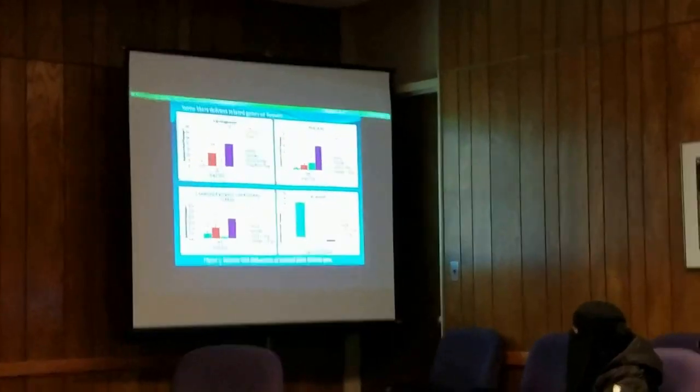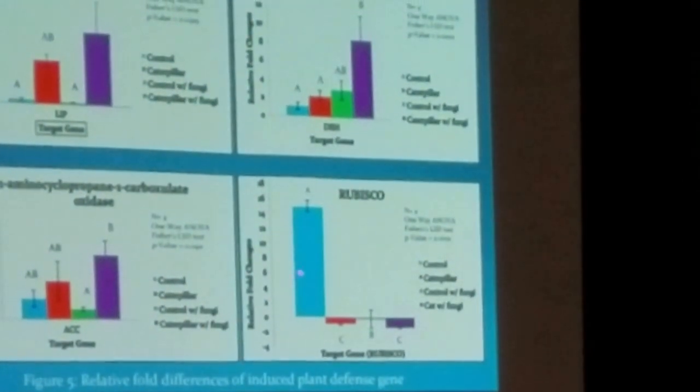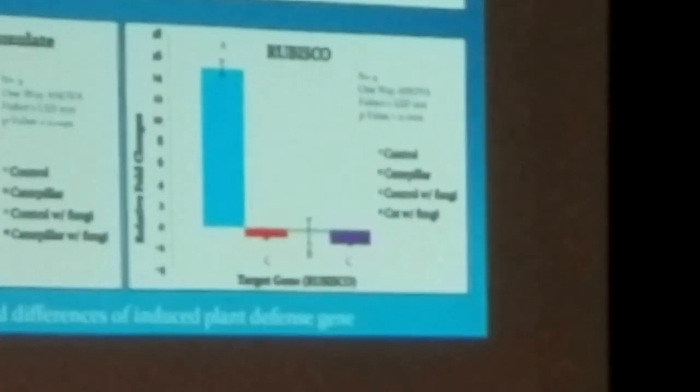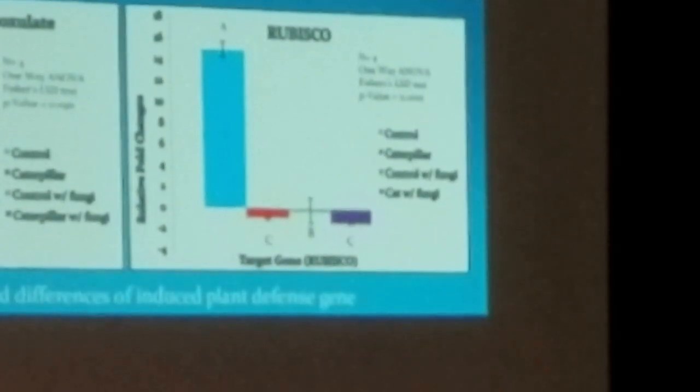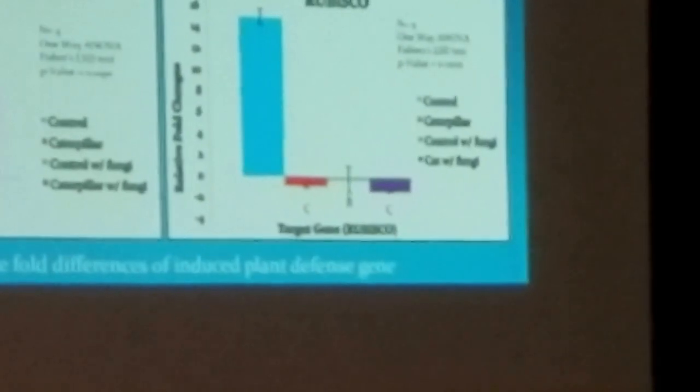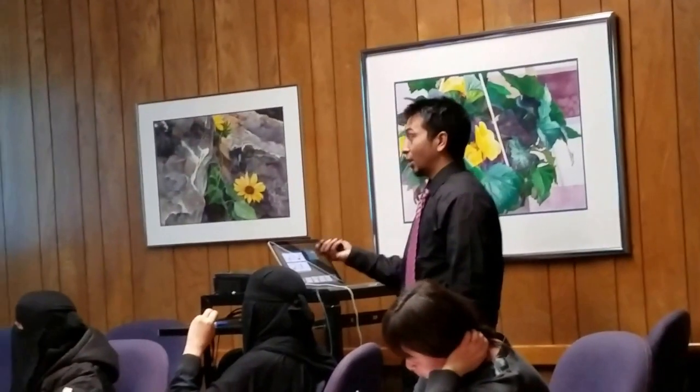The last gene I want to show is rubisco. In normal plants, rubisco is highly expressed because rubisco helps the plant perform photosynthesis by capturing carbon dioxide from the air. But when a caterpillar feeds on it, the plant doesn't have the ability to perform photosynthesis anymore, so this gene is down-regulated. I showed it in a reverse way — slightly up-regulated with fungi treatment, but still down-regulated compared to the control. When the caterpillar is present, the plant will not be able to do photosynthesis anymore, which is why this gene is down-regulated.